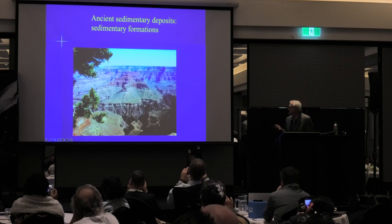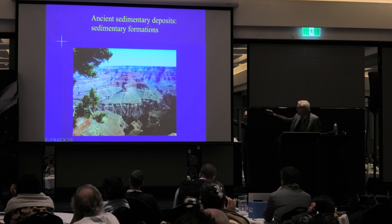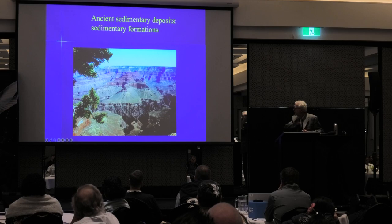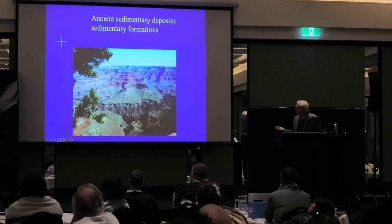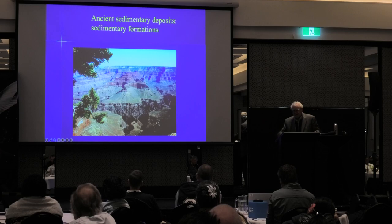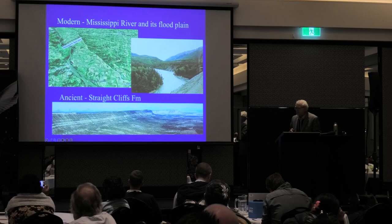Then we have the ancient sedimentary deposits — all these formations. Here in the Grand Canyon there are a series of formations from the bottom up to the top, and you see each one of those formations is very widespread. They go across here and continue for hundreds of miles — very widespread deposits. That's what I'm talking about: widespread deposits, hundreds of thousands of square miles.